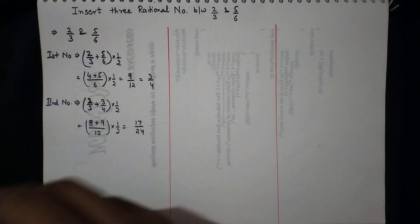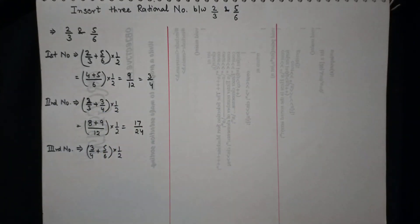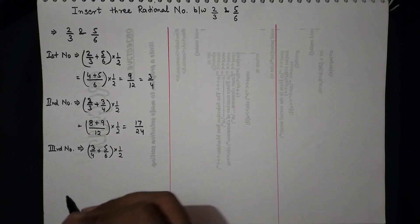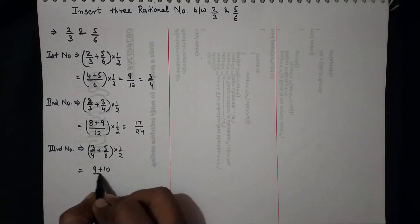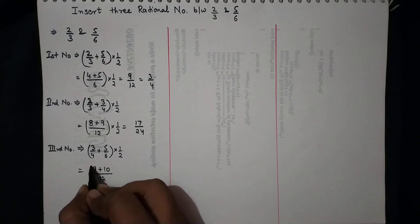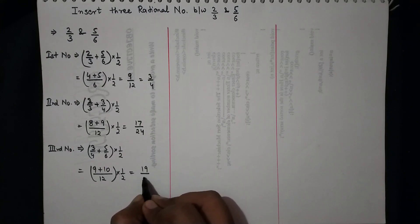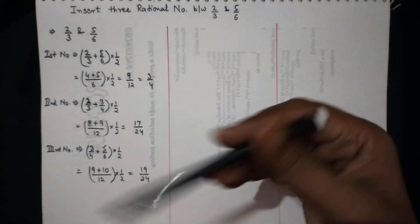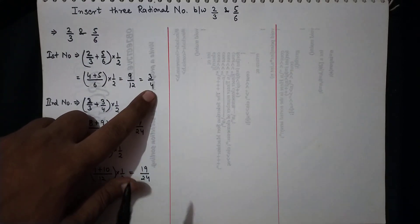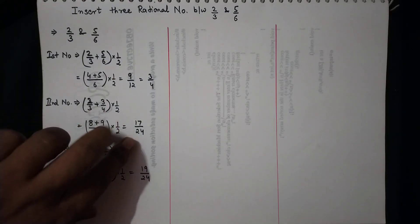For the third number, we take the two adjacent numbers and add them divided by 2. Adding gives 9 plus 10 upon 12, multiplied by 1/2, which equals 19/24. So these three numbers — 3/4, 17/24, and 19/24 — were found by adding pairs and dividing by 2 each time.